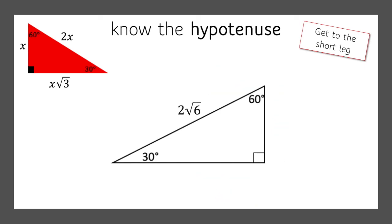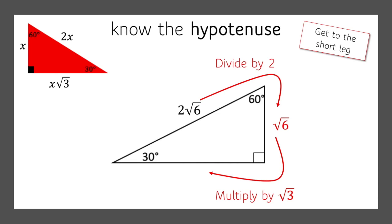Doing another one — let's say the hypotenuse is 2 times the square root of 6. We just divide by 2 to get to the short leg, so we know the short leg is the square root of 6. To get to the long leg, multiply by the square root of 3 — that's the square root of 18. But you can't have a perfect square hiding under there, and 9 is hiding under there. So we take the 9 out and get 3 times the square root of 2.